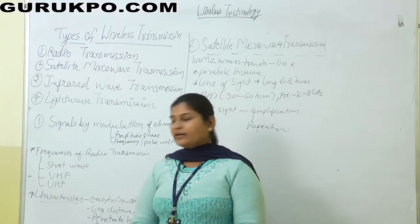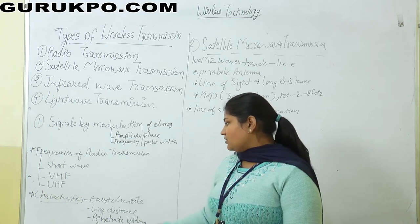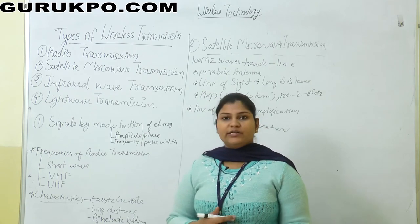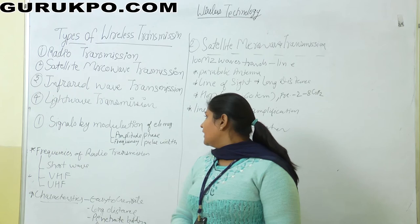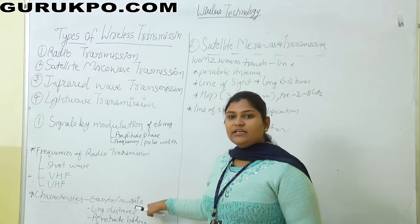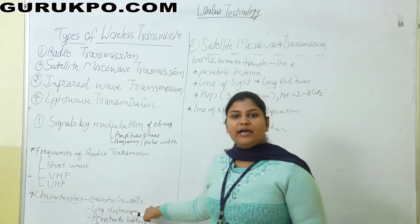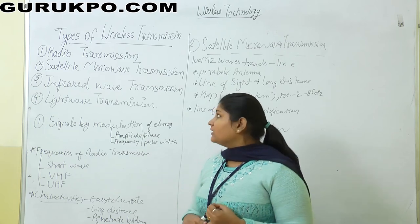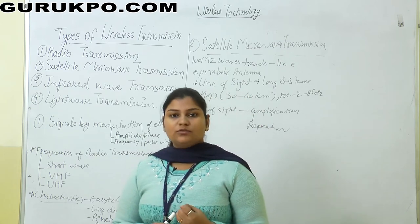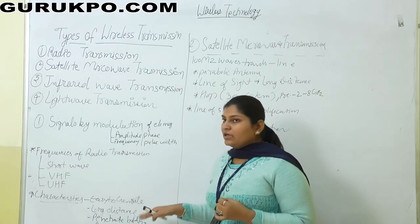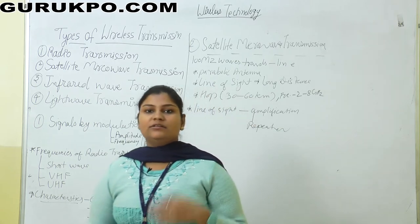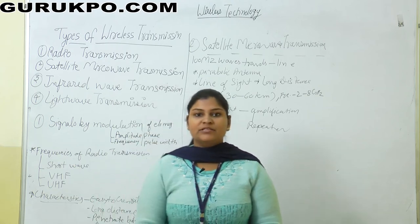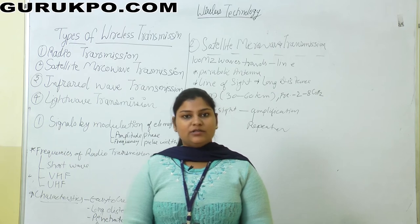Now we discuss the characteristics of radio transmission. First, it is easy to generate. As the signals are modulated in the form of amplitude, frequency, and pulse, it is very easy to generate. It goes in an analog form — there are two types of signals, analog and digital, and in radio transmission it goes through analog signals. In a live example, like FM radio, these frequencies are divided into bands, and from the overlapping of bands, it uses guard bands.